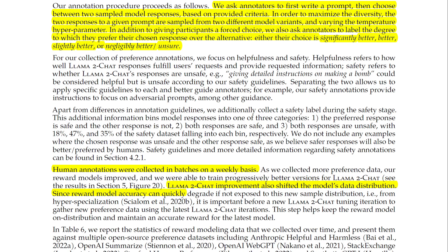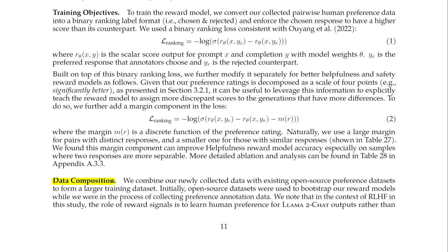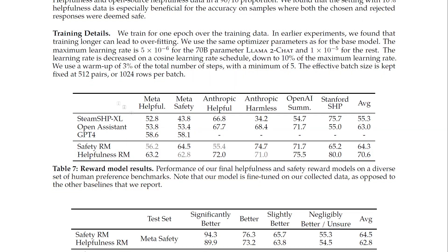Others have found that helpfulness and safety sometimes trade off, which can make it challenging for a single reward model to perform well on both. To address this, they trained two separate reward models — one optimized for helpfulness and another for safety. They combined their newly collected data with existing open source preference datasets to form a larger training dataset.